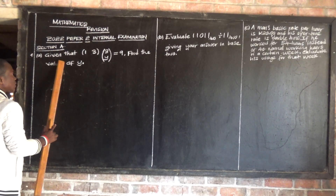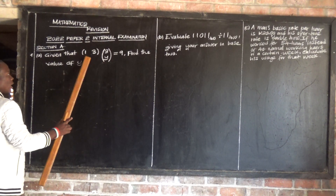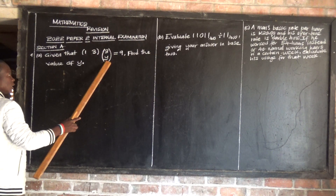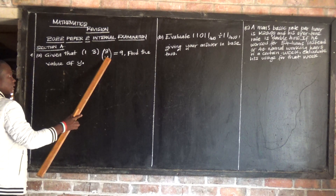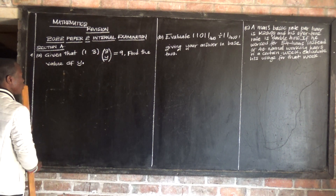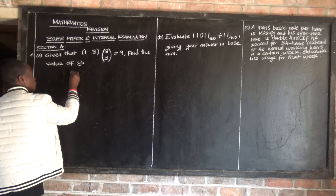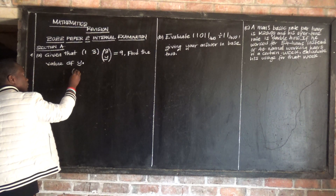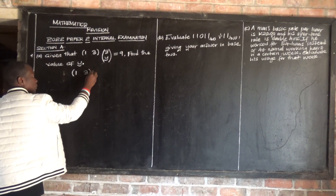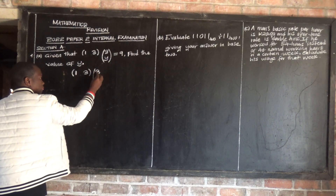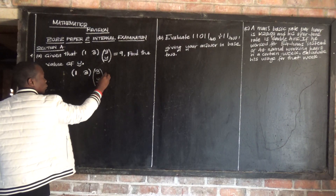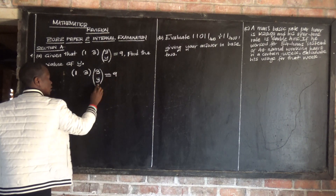We are given that the first matrix is [1, 3] and the other one is [3, y]. The product of this matrix times this matrix is positive 9. We are told to find the value of y. So what it means is when we multiply [1, 3] as a matrix by the other matrix which is [3, y], we are supposed to get positive 9.